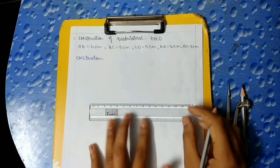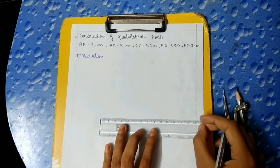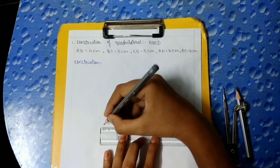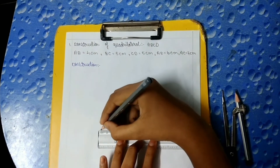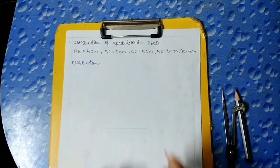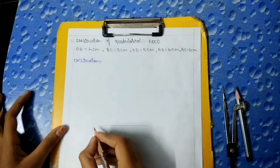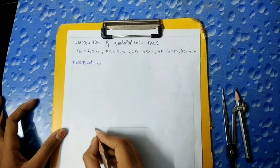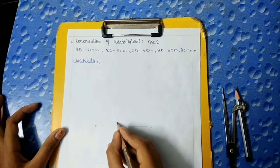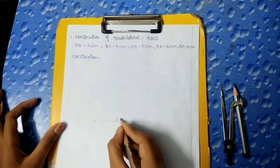First, we should draw the baseline of 7 cm and we should name it as A and C. This is 7 cm.